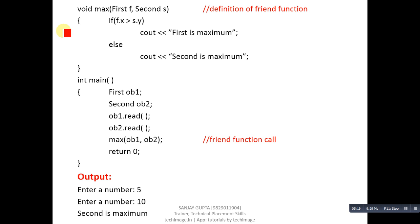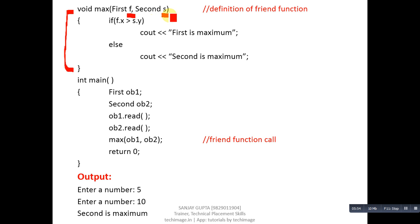Moving forward, the definition of max is written without any scope resolution operator, because it belongs to more than one class and you cannot use a scope resolution operator in that case. This function receives two arguments — one inside f and one inside s — then an if condition compares f.x and s.y. If the condition is true, 'first is maximum' is printed; otherwise, 'second is maximum' is printed.